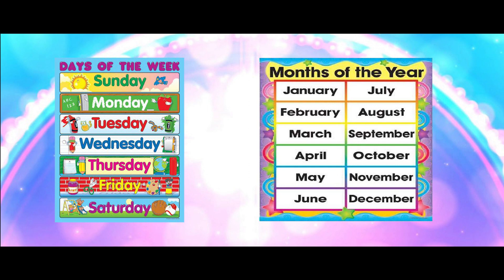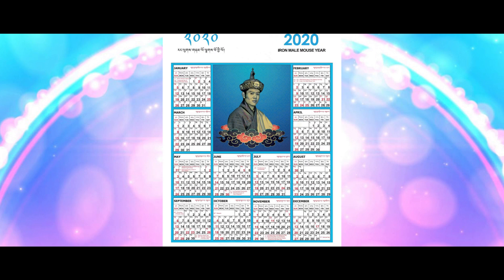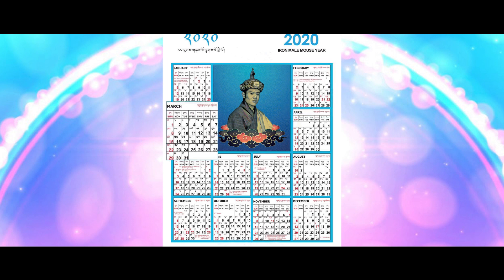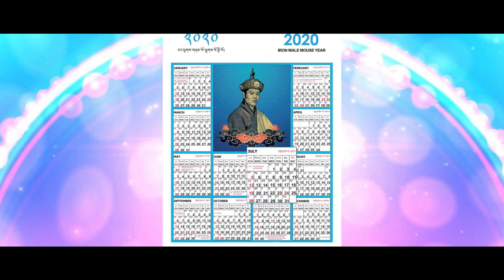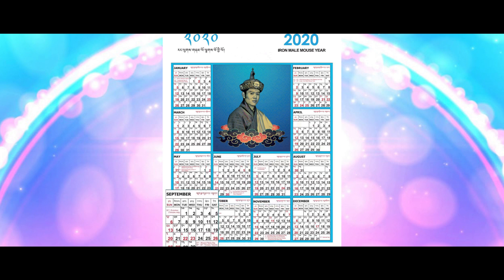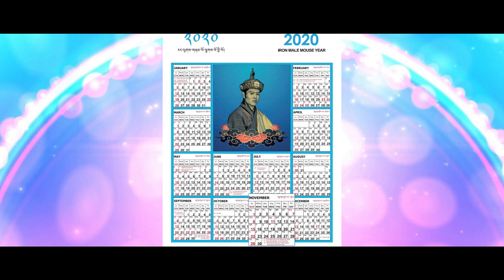Let's try to read a calendar now. Look at this calendar — you will see all 12 months here. Can you read the names of the months? January, February, March, April, May, June, July, August, September, October, November, and December.